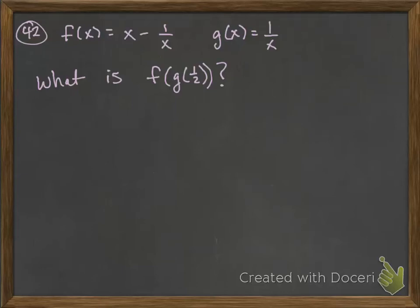Number 42 says, given f of x equals x minus 1 over x, and g of x equals 1 over x, what is f of g at 1 half?